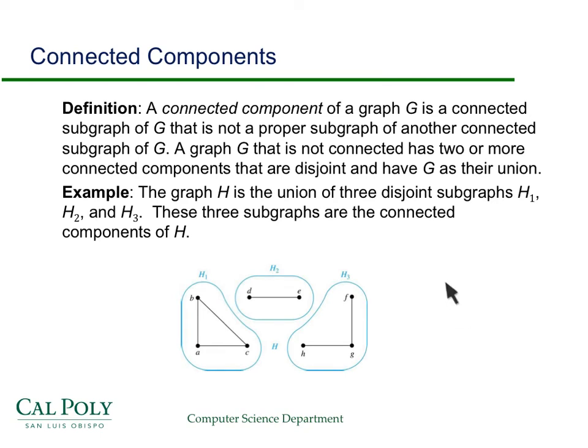So now we can talk about connected components. Again, this is just for undirected graphs. A connected component is a subgraph that's not a proper subgraph of any other connected subgraph. So you want a connected subgraph that's as big as possible. That's all that's saying. And a graph that is not connected, if G itself is not connected, then it has two or more connected components that are disjoint, and G will be their union. So here's an example of a graph H that's made up of three different components: H1, H2, and H3. Now, this is pretty intuitive. Now, when we get to directed graphs on the next slide, you'll see that life is a little more complex.